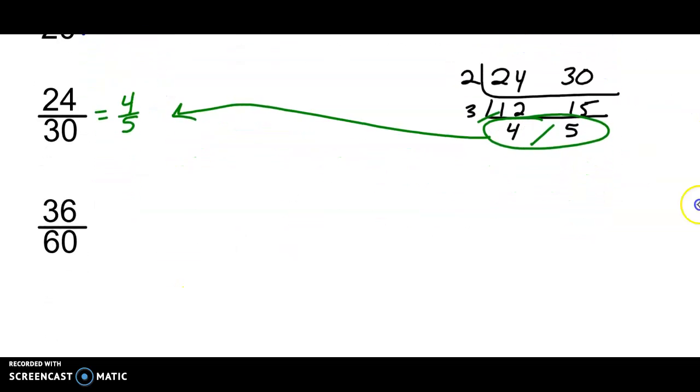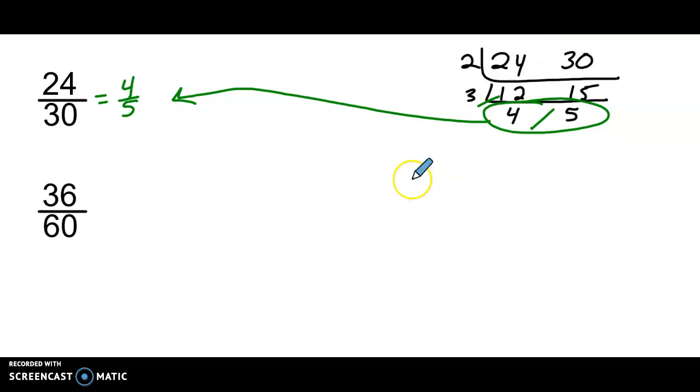Alright. Let's do 36/60. Alright. Here we go. 36/60. What's a factor I can pull out of both of those numbers? Well, I know that 2 can go into it because they're both even.